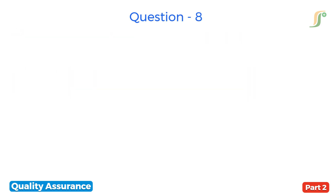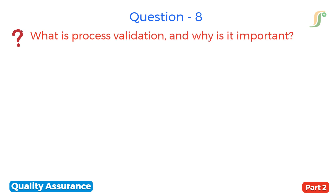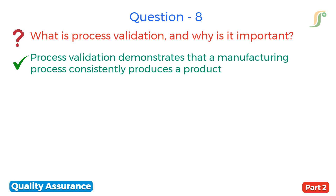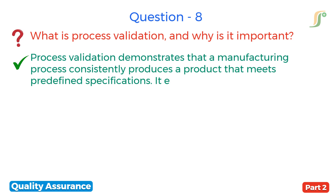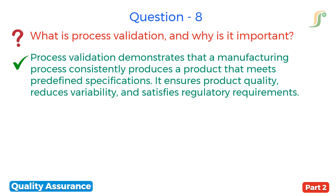The eighth question is: what is process validation and why is it important? Process validation demonstrates that a manufacturing process consistently produces a product that meets predefined specifications. It ensures product quality, reduces variability and satisfies regulatory requirements.